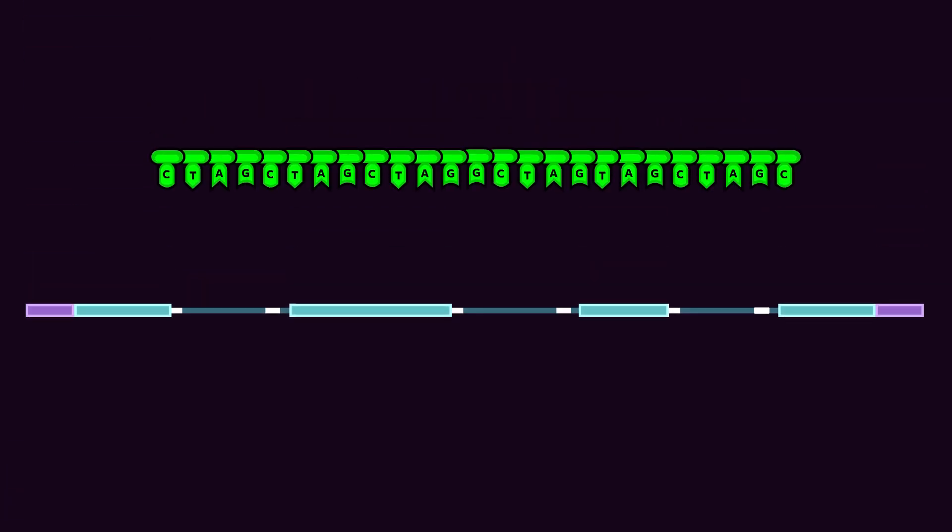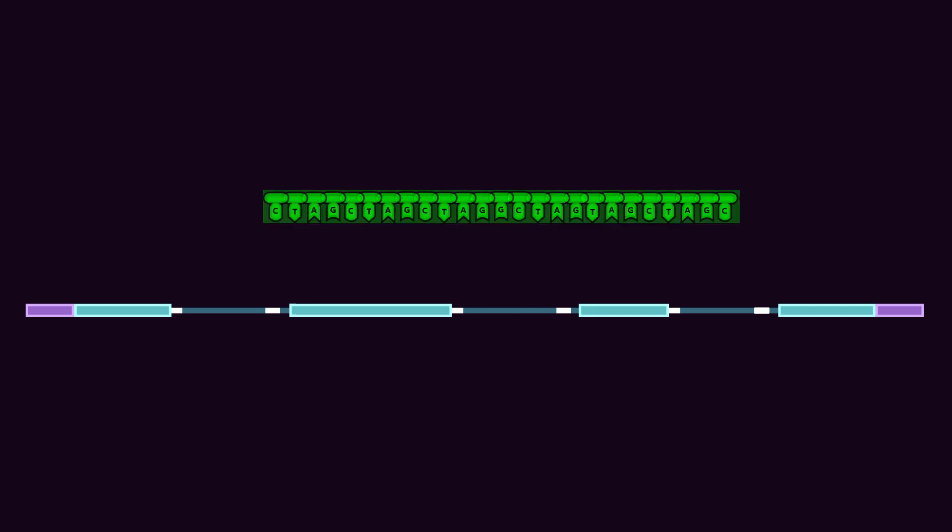Antisense Morpholino Oligos can be used to block SNRP binding sites, which changes the pattern of splicing. Morpholinos are usually 25 bases in length. Their sequences can be custom designed to block almost any SNRP binding site.